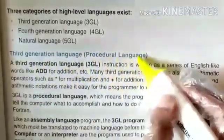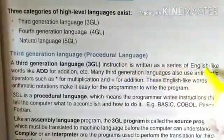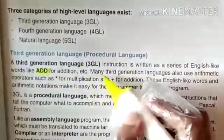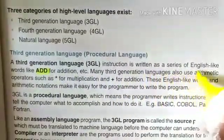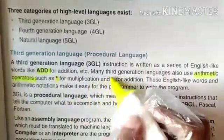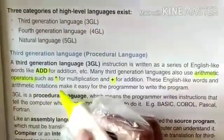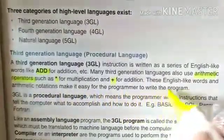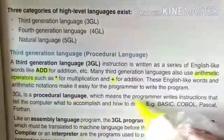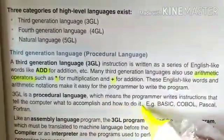Third Generation Language is a procedural language. A 3GL instruction is written as a series of English-like words like 'add' for addition. Many 3GL languages also use arithmetic operators such as 'multiply' for multiplication and 'plus' for addition. These English-like words and arithmetic notations make it easy for the programmer to write programs. 3GL is a procedural language, which means the programmer writes instructions that tell the computer what to accomplish and how to do it.